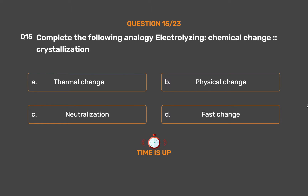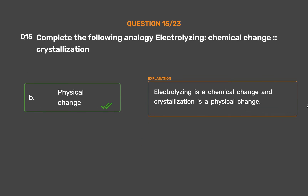The correct answer is Option B: Physical change. Electrolyzing is a chemical change and crystallization is a physical change.